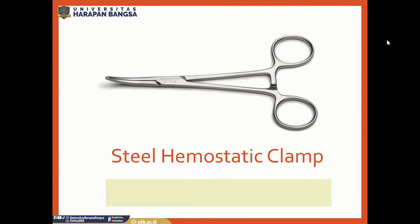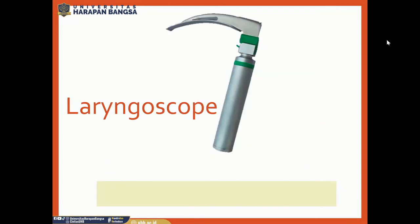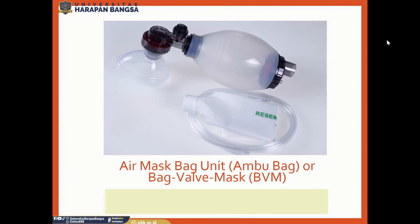This is a steel hemostatic clamp. Steel hemostatic clamp is for clamping, locking, or holding onto a blood vessel during surgery. This is a laryngoscope. Laryngoscope is for opening the mouth or elevating the larynx and exposing the esophageal entrance.